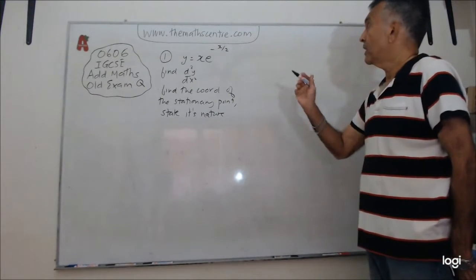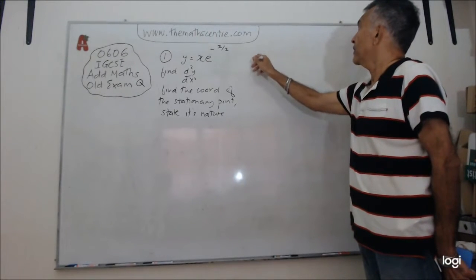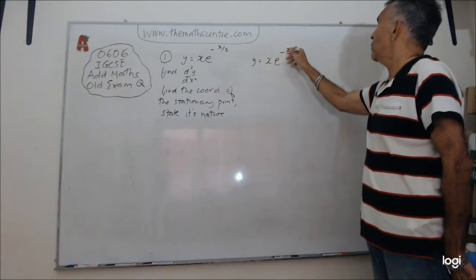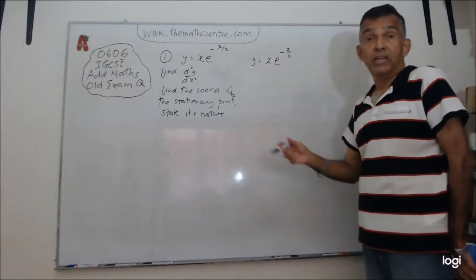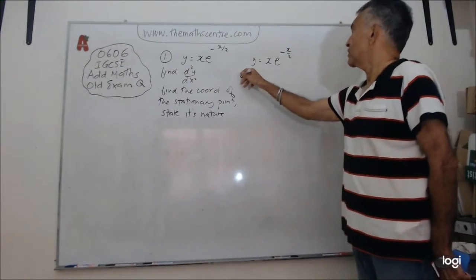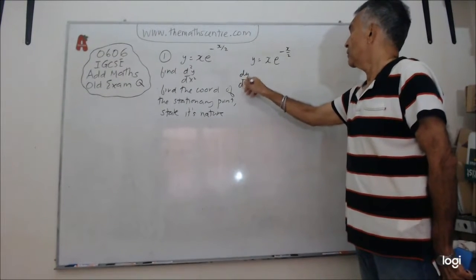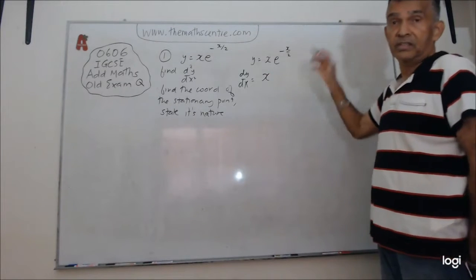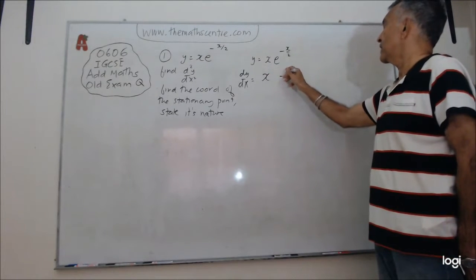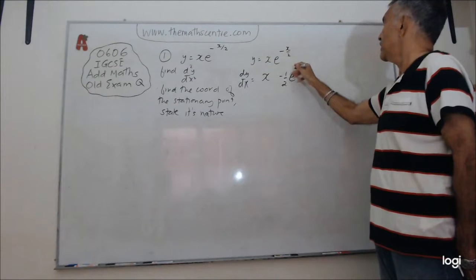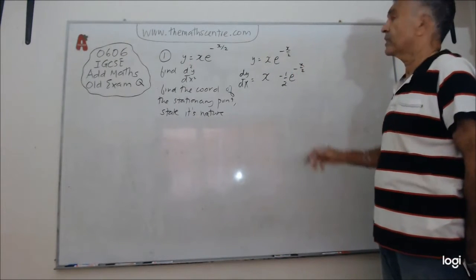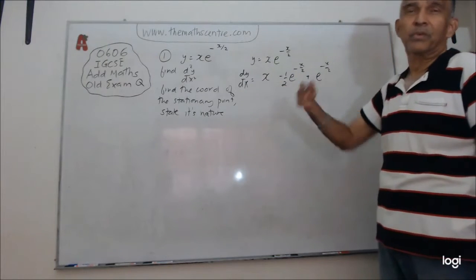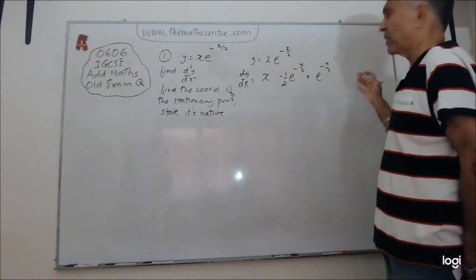Let's start slowly. We have y equals x e to the power of minus x over 2. So let's find dy/dx. dy/dx will be using the product rule. Write down the first term, you differentiate the second. You will get minus half e to the power of minus x over 2. Then you write down the second term and differentiate the first. When you differentiate x, you get 1, so I'm not writing it down.